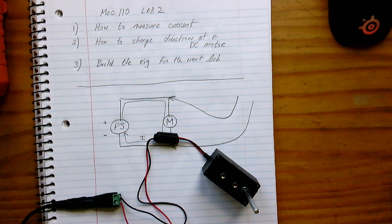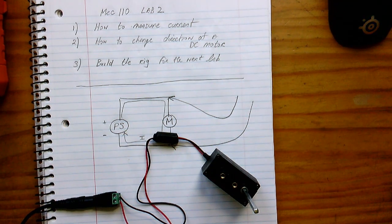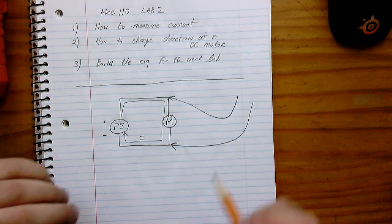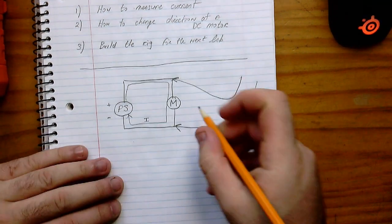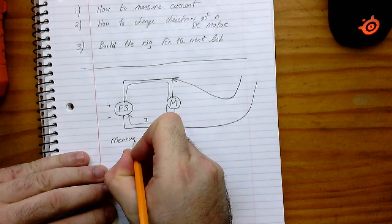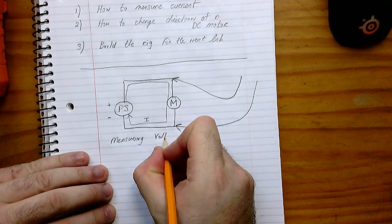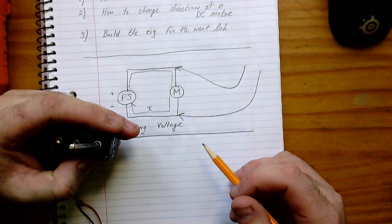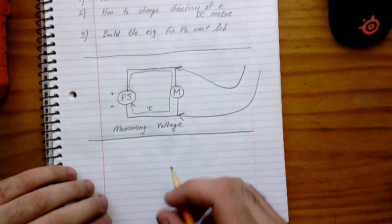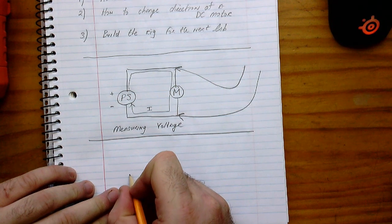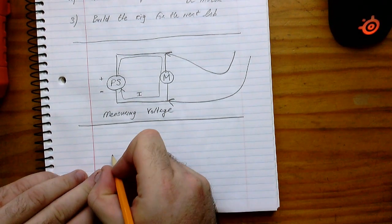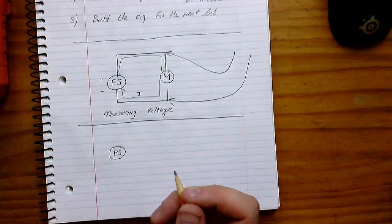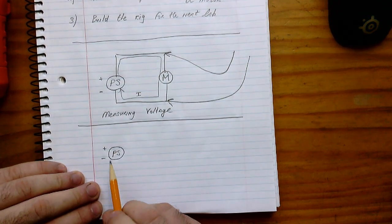Whenever you measure voltage, the voltmeter doesn't have to be in the circuit. But whenever we measure current, you have to break the circuit. We're measuring voltage here easily in parallel, but if we want to measure current - to see how much is flowing through the motor - we have to break the circuit and insert the meter. If I'm doing a bad job explaining this, there are thousands of videos on YouTube.